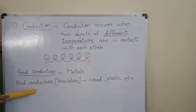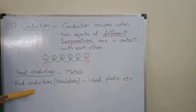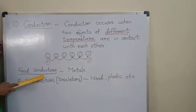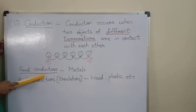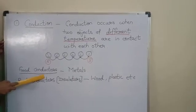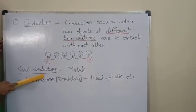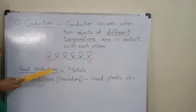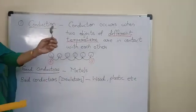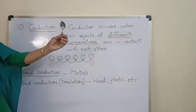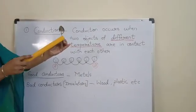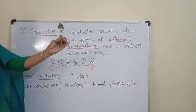Good conductors are substances which allow heat to pass through them. Example, metals. I am having a spoon in my hand. This is a good conductor of heat.